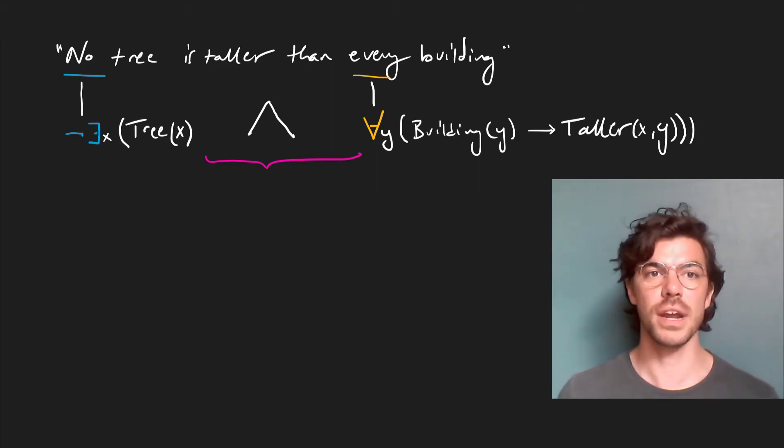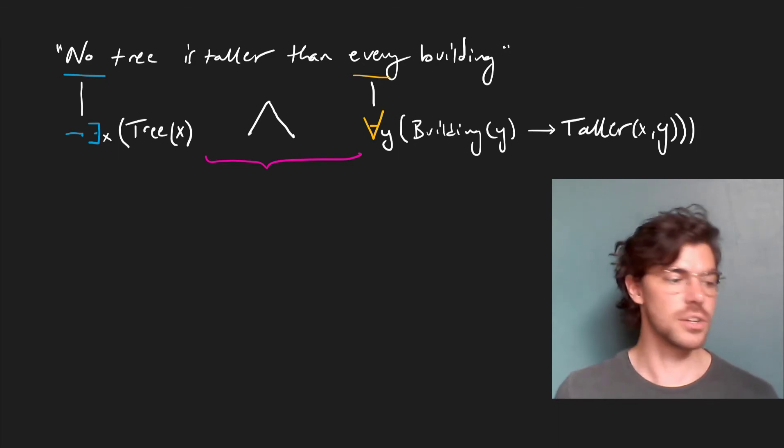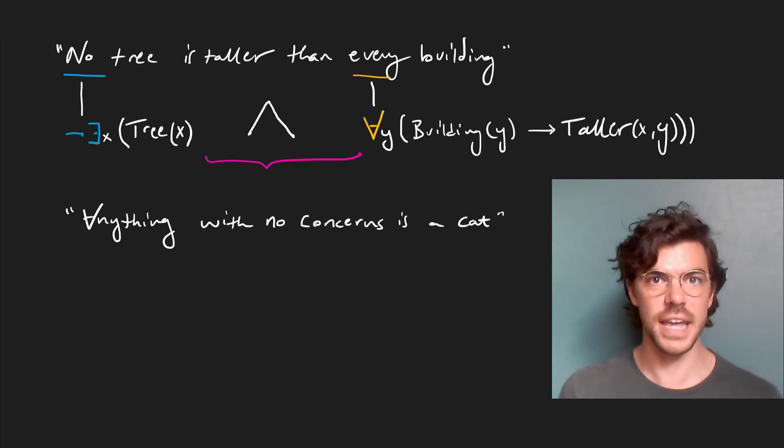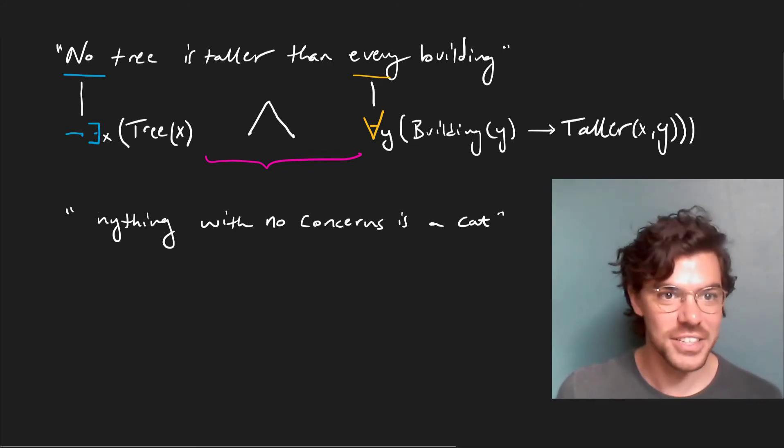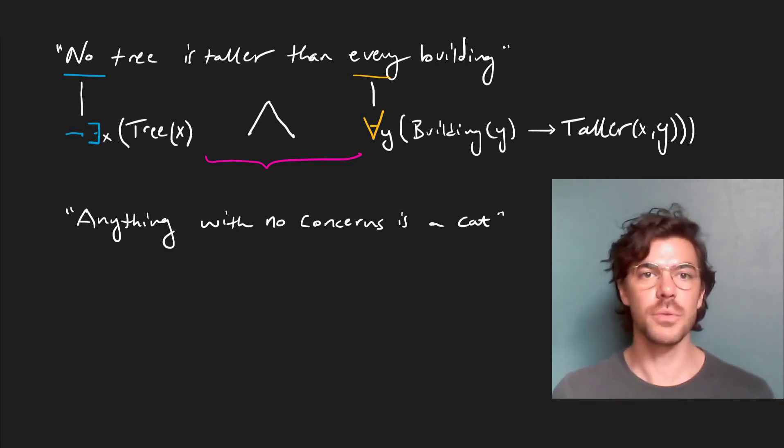Here again, we've translated by breaking this down into smaller tasks. Let's consider one final example. We can say anything with no concerns is a cat. Whoops, I've written my a upside down. Well, I just gave it away there. Okay, anything with no concerns is a cat.